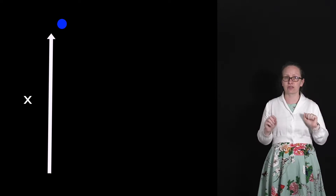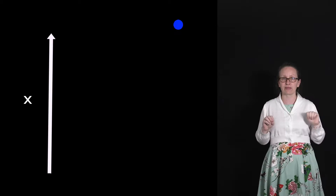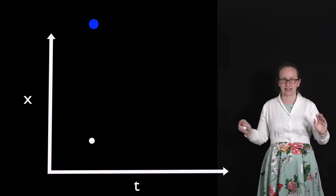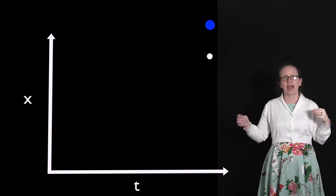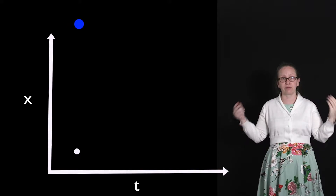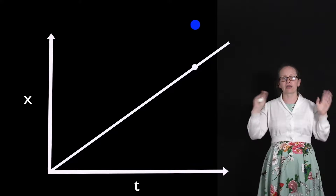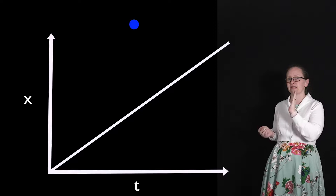If we want to draw a displacement versus time graph for this dot, we put the displacement on the y-axis — so even though it's moving in the x direction we can show its displacement on the y-axis — and we put the time along the x-axis. With this dot the displacement is increasing at a constant rate, so it is represented by a straight line on our displacement-time graph.